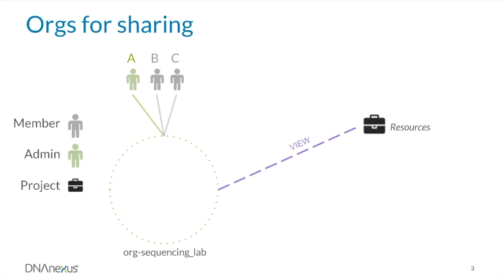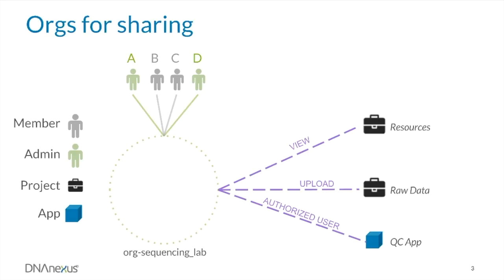User A can even add another org admin, user D, to the org. We can add a second shared project, the Raw Data project, and give everyone in the org upload permissions to that project. You can also share an app with an org by making the org an authorized user of the app. In this case, we have shared a QC app with Org Sequencing Lab, ensuring that all four users have access to view and run this app.